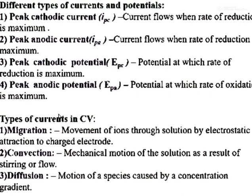There are three types of currents in cyclic voltammetry: migration, convection, and diffusion. However, the whole cyclic voltammetry setup is based on diffusion current. Migration current is due to electrostatic attraction — the movement of ions due to electrostatic attraction results in migration current — which we need to avoid in our cyclic voltammetry experiment.